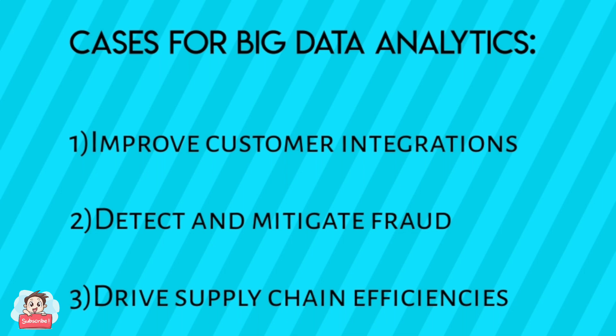Using the power of big data along with predictive and prescriptive analytics, and comparison of historical and transactional data, helps companies predict and mitigate fraud. Drive supply chain efficiencies by gathering and analyzing big data to determine how products are reaching their destination, identifying efficiencies and where costs and time can be saved. Sensors, logs, and transactional data can help track critical information from the warehouse to the destination.